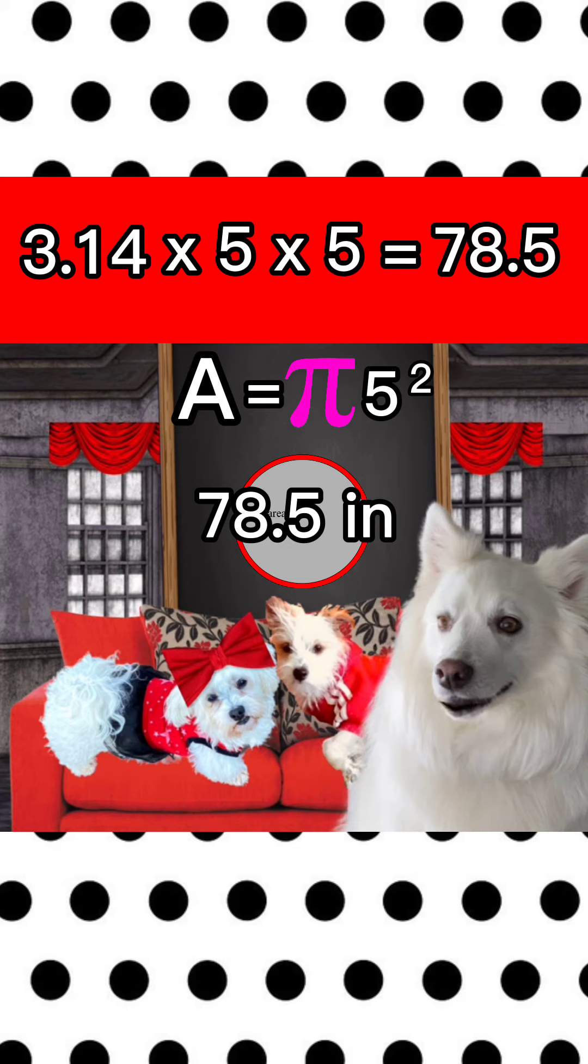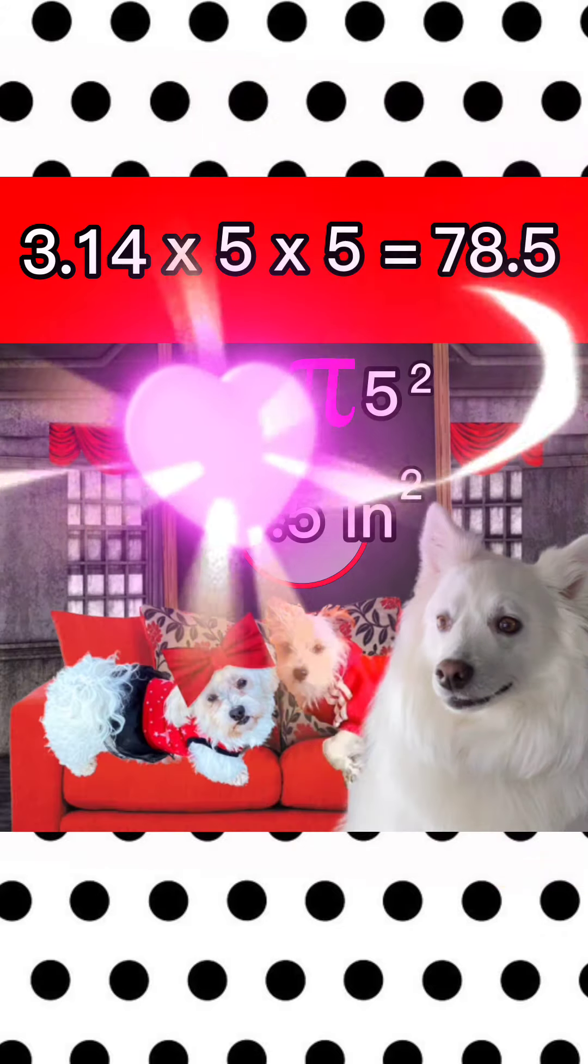Whenever you are doing area, your units are always squared. You must put a little 2 on the units. If you don't remember to put that 2 on there, no one will know that it's area, and it will not be correct. So the answer is 78.5 inches squared? You got it, Dexter. That is the correct answer.